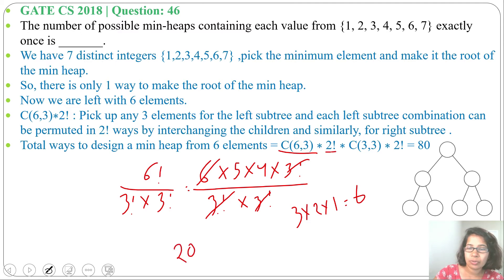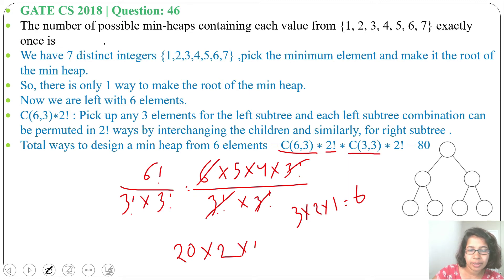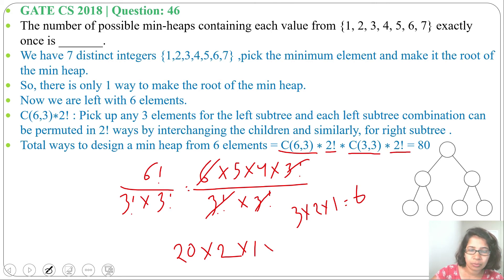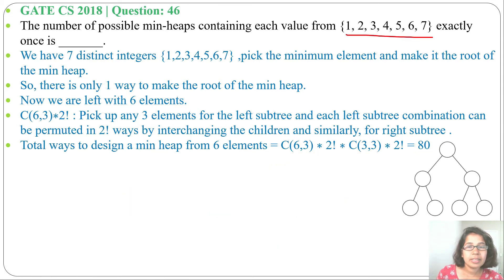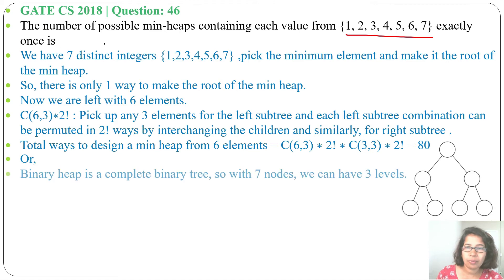Then 2! × 2! = 2 × 2 = 4, and C(3,3) = 1. So total = 20 × 2 × 2 × 1 = 80. That gives us the answer: 80.